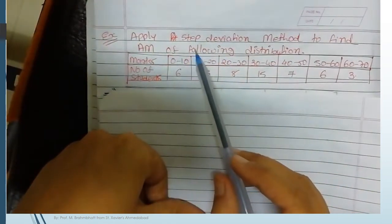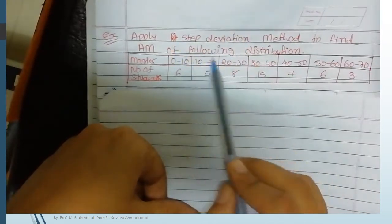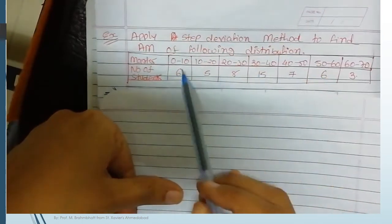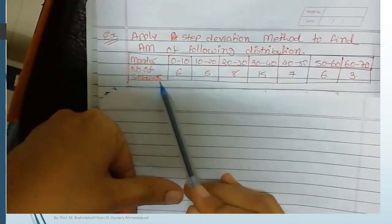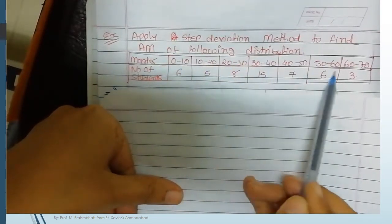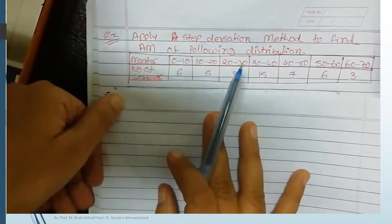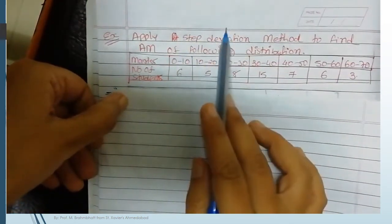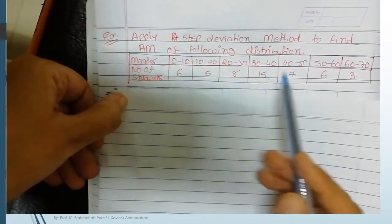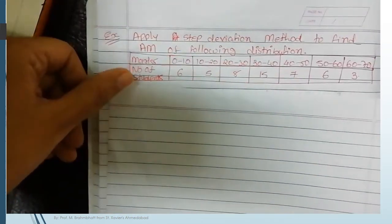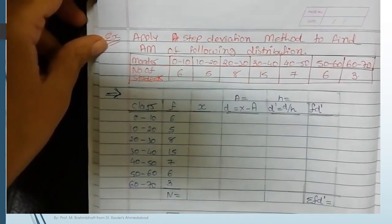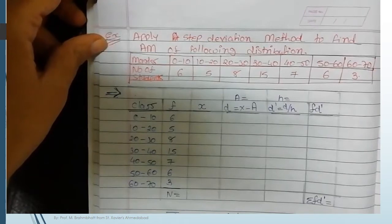Let's understand how to calculate arithmetic mean using the step deviation method. In the question, marks and number of students are given, with marks given in class intervals. This is clearly a case of grouped frequency distribution, so we will select the formula of step deviation method for grouped frequency distribution.